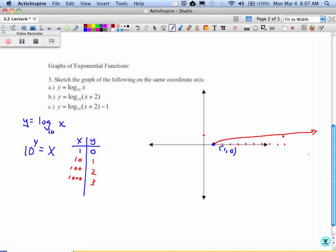So what happens on the other side, though, when you do your negative 1, your negative 2, your negative 3? So now we're going to start moving down on the y-axis. What do you do with negative exponents? 10 to the negative 1 is 1 tenth or 0.1, 1 one hundredth or 0.01, and 1 one thousandth or 0.001.